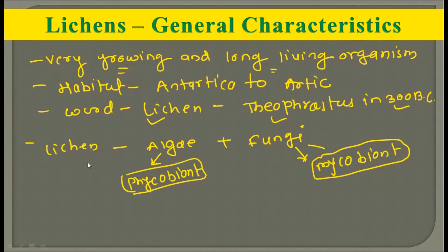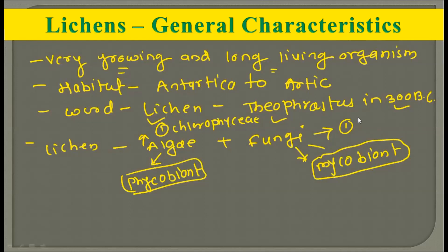The algal partners are generally members of Chlorophyceae, while the fungal member often belongs to Ascomycetes or Deuteromycetes. So the algal partner may belong to Chlorophyceae while the fungal partner may belong to Ascomycetes or Deuteromycetes.